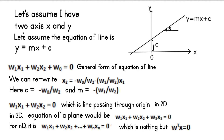Our general equation is w1*x1 + w2*x2 + w0 = 0. Suppose I have to write a line passing through the origin — what would the equation be? In 2D: w1*x1 + w2*x2 = 0. In 3D, the equation of a plane would be w1*x1 + w2*x2 + w3*x3 = 0. For ND, the equation would be w1*x1 + w2*x2 + ... + wn*xn = 0, which is nothing but w-transpose · x = 0. This is the equation of a plane passing through the origin. If it is not passing through the origin, the equation would be w-transpose · x + w0 = 0.